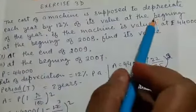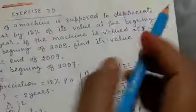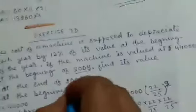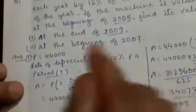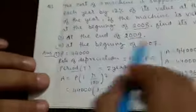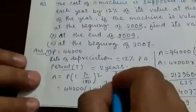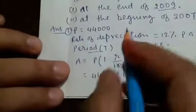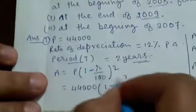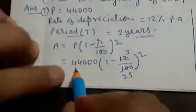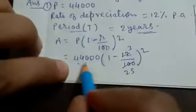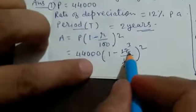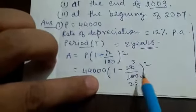For the first part, from 2008 to 2009 the time duration will be two years. We will apply the formula A is equal to P into 1 minus r by 100 to the power 2. The principal is 44,000 rupees, into 1 minus 12 upon 100.